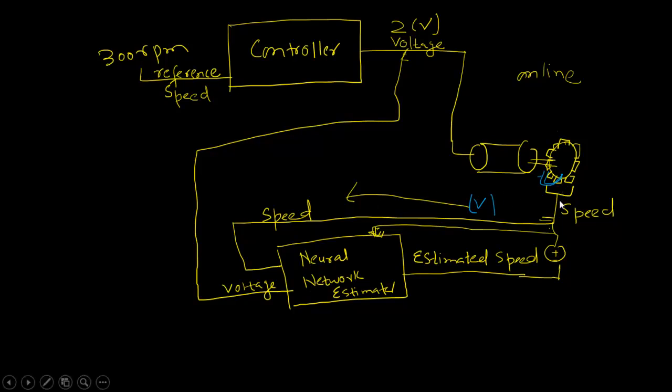Now what happens here is that because of this external disturbance, there will be a difference in the estimated speed and the actual speed. So what happens is that this calculated error will be fed back to the neural network estimator, and this will cause the propeller to fight back.